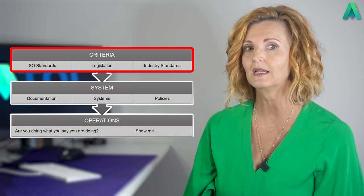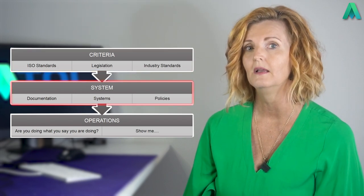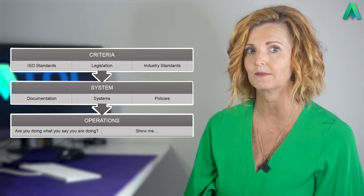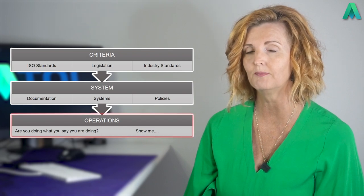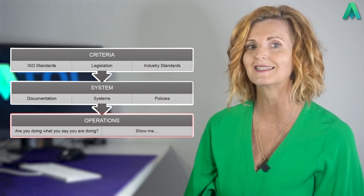Your planned audits should ensure that there are two criteria areas that you audit against and will look something like this. The criteria level is ISO 45001. The system level is your own OH&S management system. And the operations level is where you can see it all in action.